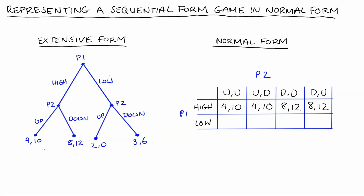Now let's think about the next row — if Player 1 plays low. If Player 2 plays UU (up if high, up if low), Player 1 has played low and Player 2's strategy is to respond to low by playing up, so the payoffs are 2, 0. If Player 1 plays low and Player 2 plays UD (up if high, down if low), then Player 2 will respond by playing down, so they end up at the terminal node with payoffs 3, 6.